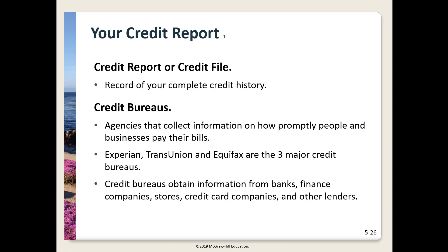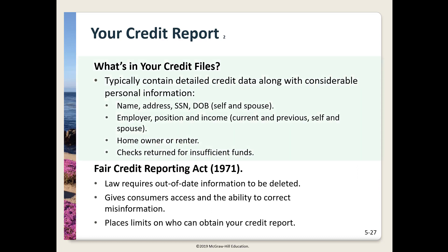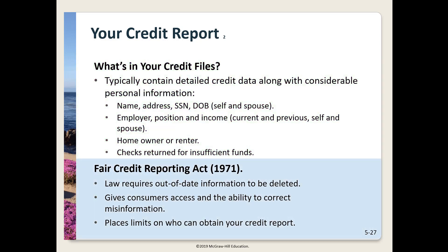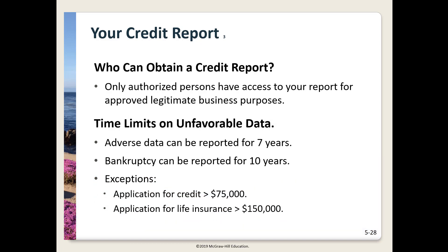Your credit report is a complete history of your use of credit. There are three major credit bureaus: Experian, TransUnion, and Equifax. Credit bureaus receive data from banks and businesses on how well you meet your debt obligations. Credit files contain vast information: your name, address, Social Security number, date of birth, employer, position, income and length of employment, homeowner or renter status, and all credit-related events. The Fair Credit Reporting Act of 1971 requires that out-of-date information be deleted from your file and gives consumers the ability to correct erroneous information. This law also places limits on who can obtain your credit report.